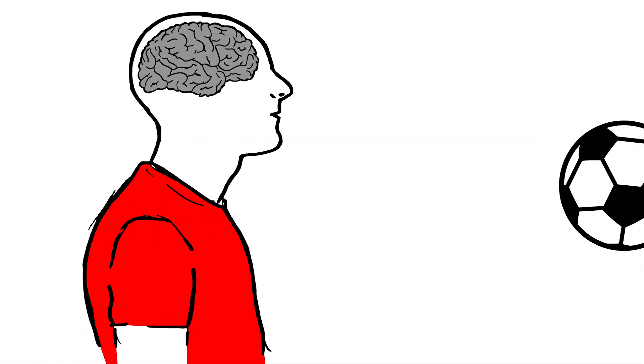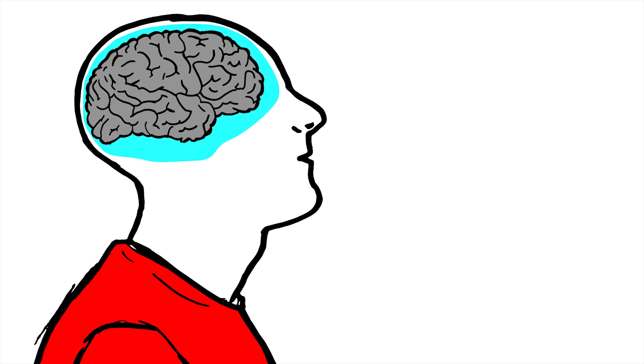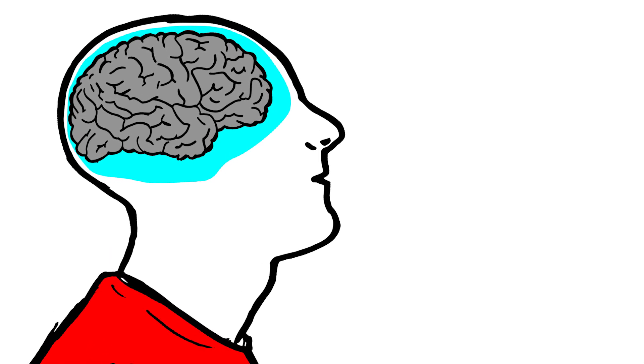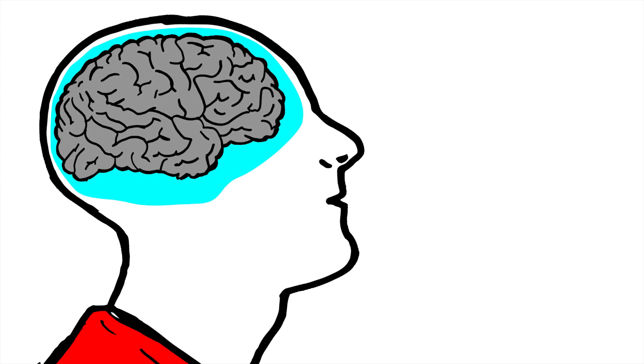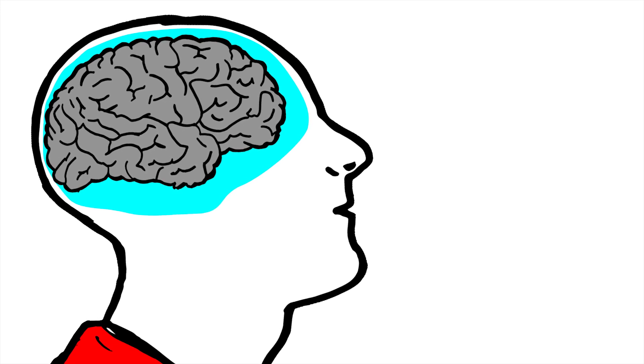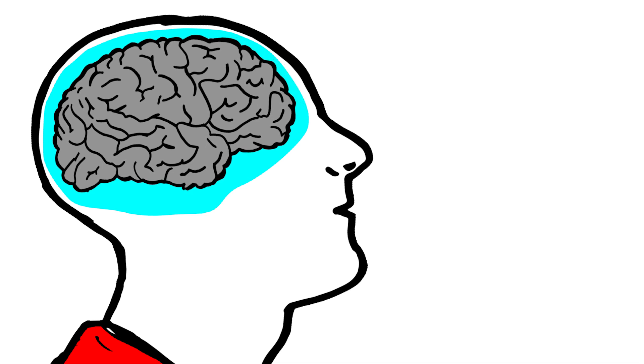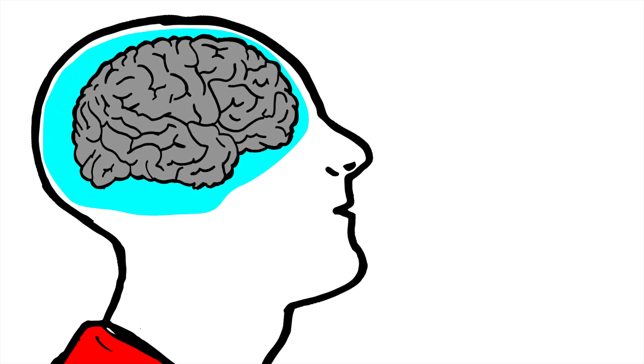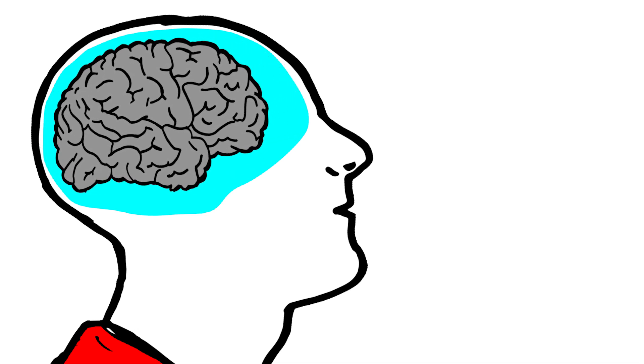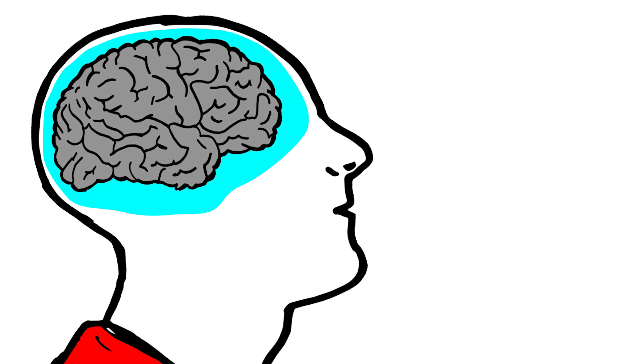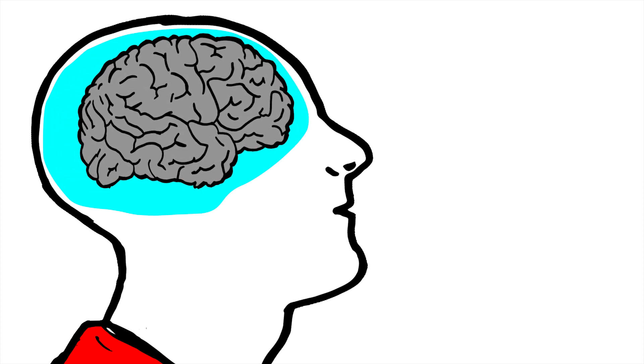When you get hit — you can be hit in your body or directly in the head — it causes an acceleration of your body or your head. Because your brain is inside your skull resting in cerebral spinal fluid, a water-like substance that bathes your brain, it's just floating in there. So if you get accelerated, your brain hits the inside of your skull, and then when you decelerate, your brain hits the other side of your skull.